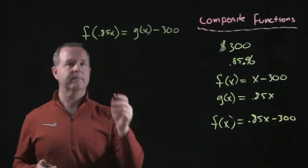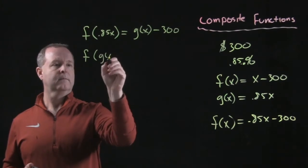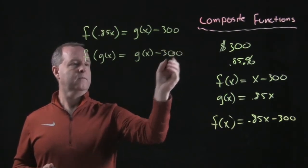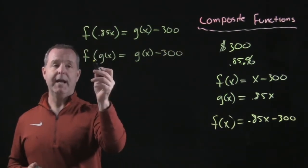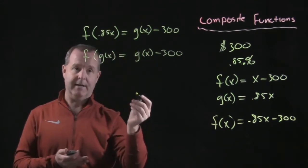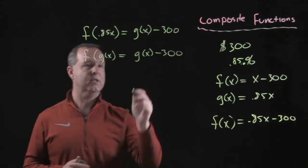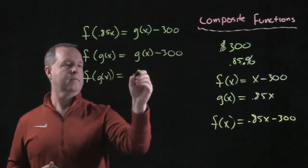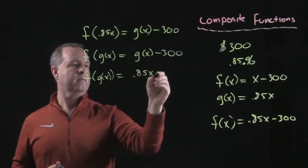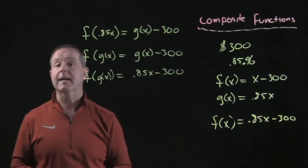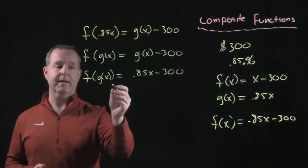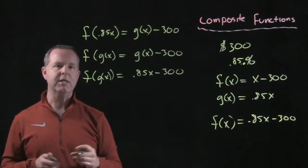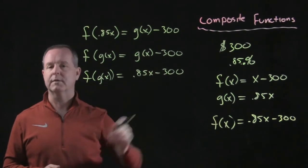And to put that in composite form, I would see this notation where I have f of g of x equals that response. And actually, let's go ahead and take the g of x out and write it this way. There we go, there's the composite function f of g of x equals .85 of x minus 300. Both discounts are being used in the exact same overall discount.